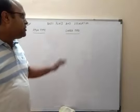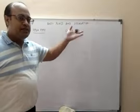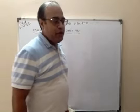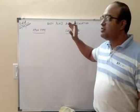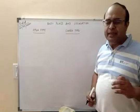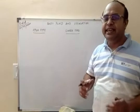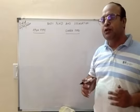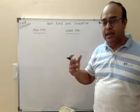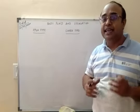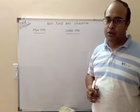Hello children, welcome to the second part of my chapter on body fluid and circulation. Today in this class I am going to explain about the open type and closed type of circulatory system. In this class I would be emphasizing more on the evolutionary trends of the heart — the primitive characteristics, the modern characteristics, and how the heart has been modified.